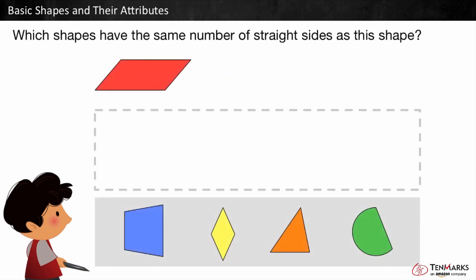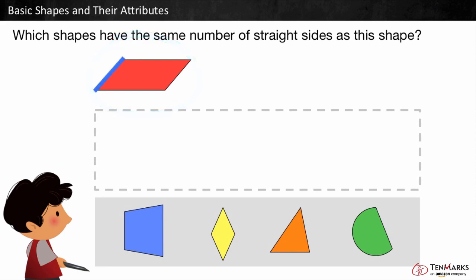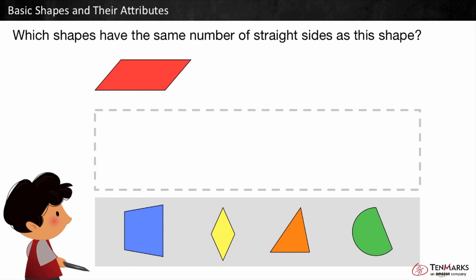Let's look at an example. Which shapes have the same number of straight sides as this shape? This shape has one, two, three, four straight sides. Which shapes below have four straight sides? This shape has one, two, three, four straight sides. It does have the same number of straight sides.